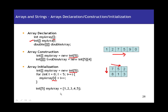There is one more way to assign values — you can initialize your array inline. The last statement does all three in one single line: it declares the array, constructs it, and also initializes it with values 1, 2, 3, 4, 5. When you use this type of declaration, you do not need to give a max size value — you just put the actual values you want to store directly.